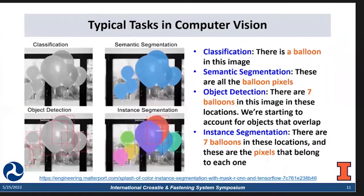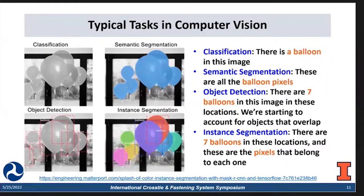I also want to introduce some typical tasks in computer vision. The first is classification — like whether there is a balloon in this image or not. The second is semantic segmentation — where are all the balloon pixels in this image. The third is object detection — where are those balloon objects and what are their locations. The last, considered the most complicated, is instance segmentation, where we not only localize each object but also extract the pixels that belong to each individual instance.